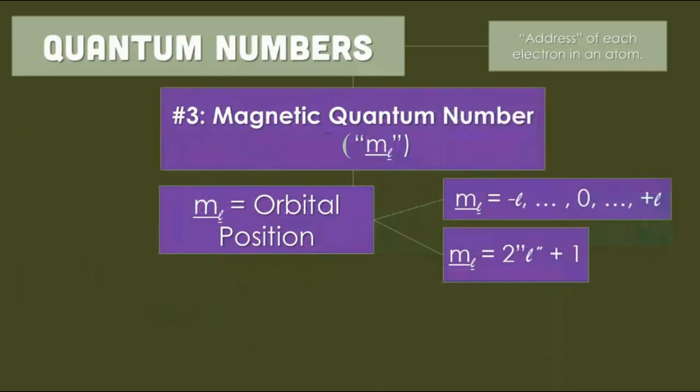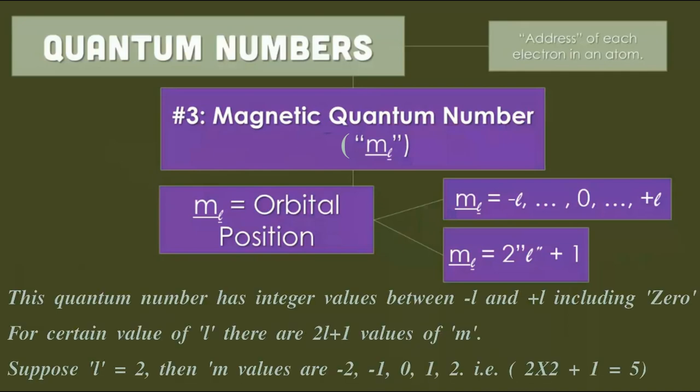Now third one is magnetic quantum number and it is denoted by m_l. It tells about the orbital position, that means it tells about the electron position in the orbital. This quantum number has integer values between minus l and plus l, including 0.